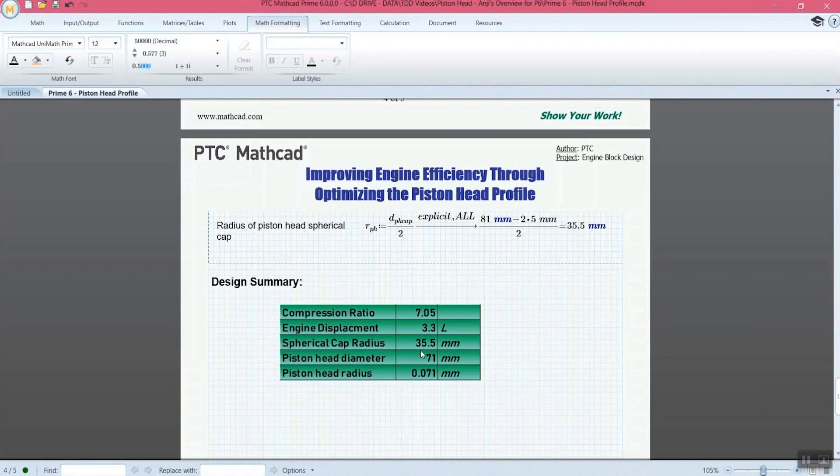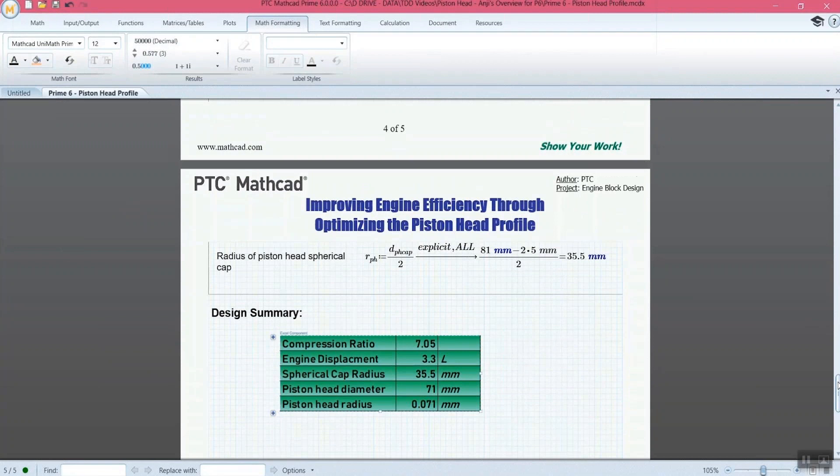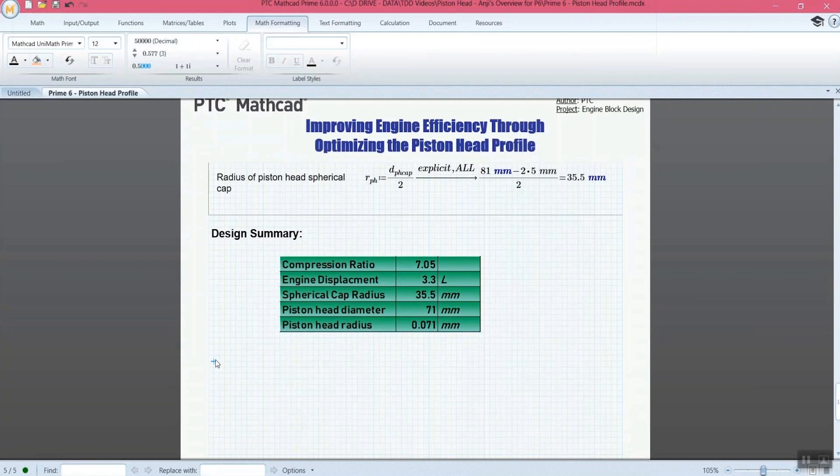And then down here, we're looking at this design summary. So this we're actually pulling right from Excel. And if we click on it, it pulls up the Excel file that we got it from. But by bringing this in from Excel directly, you're going to be able to keep this information up to date. Now, if you change the Excel information, you can update it here. It's going to be automatically updated here because it's pulled live from that link.